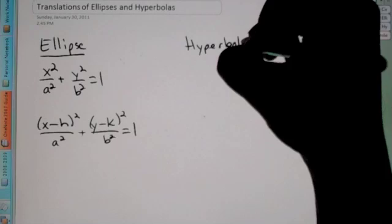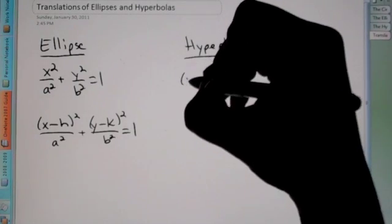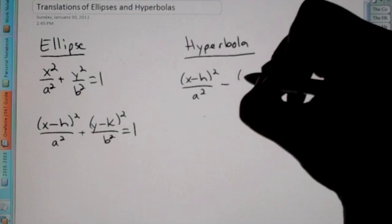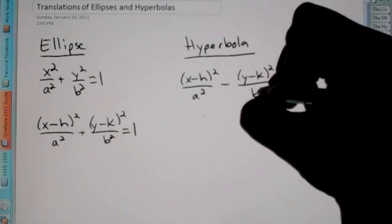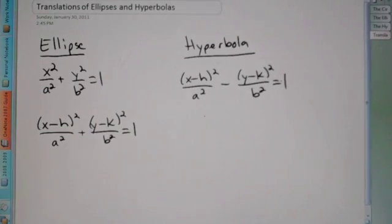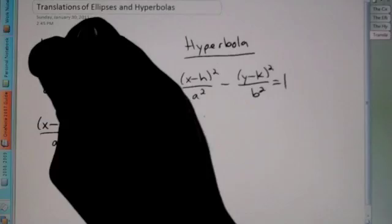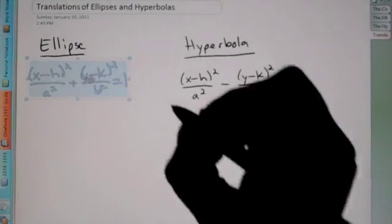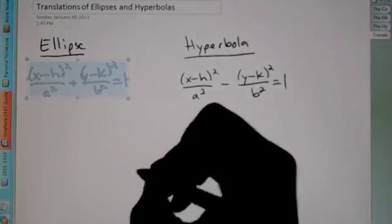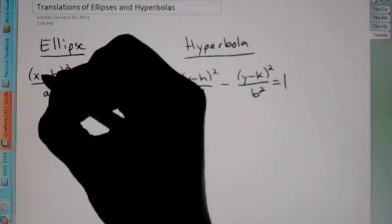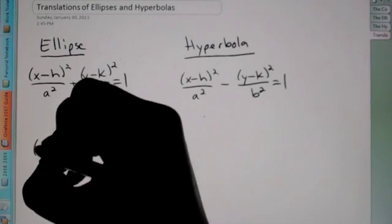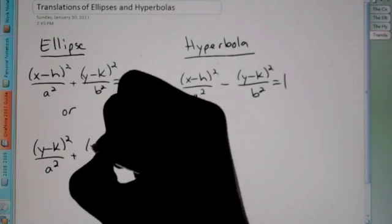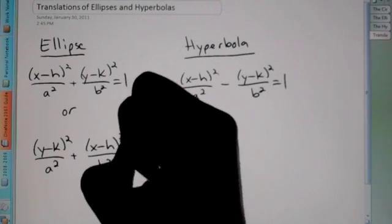So we have x minus h squared over a squared minus y minus k squared over b squared equals 1. Alright? So let me get rid of this one since we're going to be actually having the center in a different place now. And now remember that there's two, because it all depends on if a is underneath the x or the y. So we could switch this up and say y minus k squared over a squared plus x minus h squared over b squared equals 1.